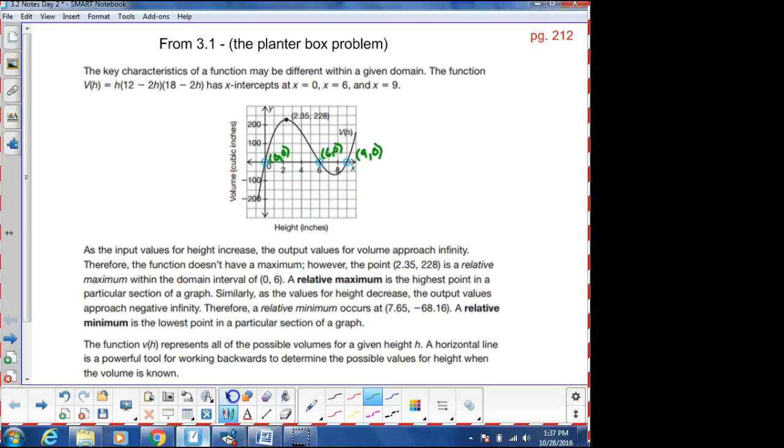And then we also found the maximum height here to be an x value of 2.35 comma 228, so that gave our maximum volume there. And then we also had a minimum down here of 7.65 comma negative 68.16.